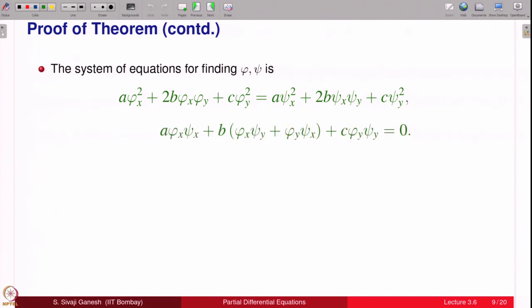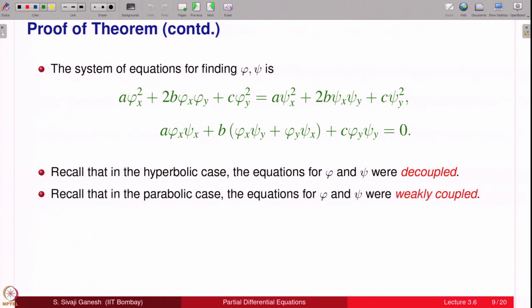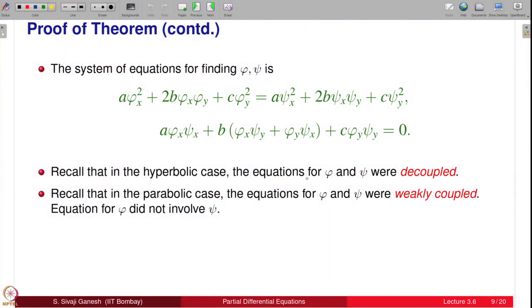The system of equations for finding φ and ψ: a remark on that. Recall that in the hyperbolic case when we wanted to find φ and ψ, the equations were decoupled. They were decoupled; φ and ψ could be solved separately. In the parabolic case they are weakly coupled; the equations for φ and ψ are weakly coupled in the sense that the equation for φ did not involve ψ at all. Unfortunately, once we solve for φ and substitute in the second equation, the equation reduces to the identity 0 = 0.